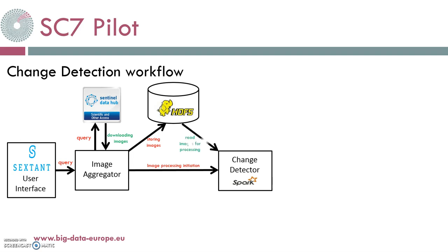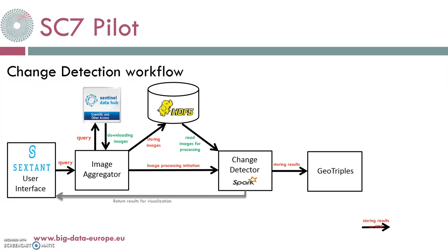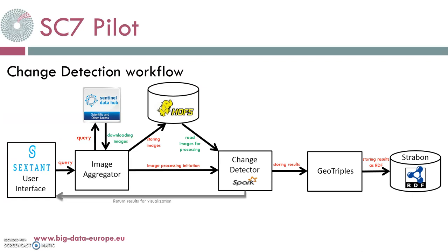The Change Detector reads the images from the HDFS, processes them, and finds areas on the ground that have changed. When the processing ends, it returns the results for visualization to Sextant and also stores them to Strabon by sending them through GeoTriples. GeoTriples is a tool that converts data to RDF.